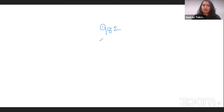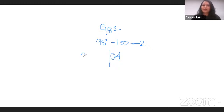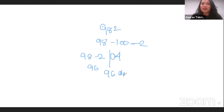Let's take 98 squared. Again, 98 minus 100 equals minus 2. Here, minus 2 whole squared is 4 — but don't forget two zeros, so it's 04. And here 98 minus 2 is 96. So our answer is 9604. You see, it's pretty easy — within about 5 seconds you can get to the answer.